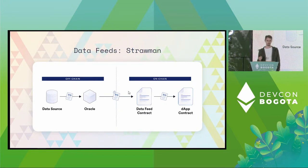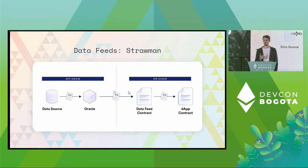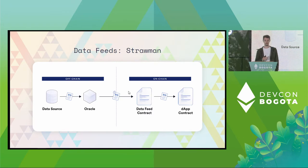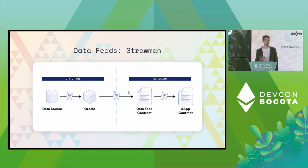If we think about the two properties — reliability and security — this system does not achieve them because we have a single point of failure. If this Oracle goes down or fails to provide the price, the system on chain won't work. Similarly, if the single Oracle is compromised or malicious, it can feed a false price to the contract on chain and cause it to be settled incorrectly and unfairly.